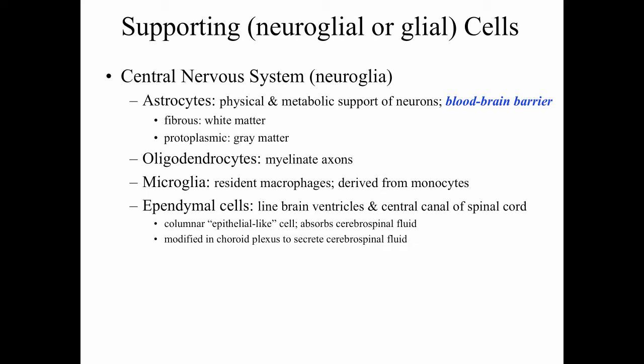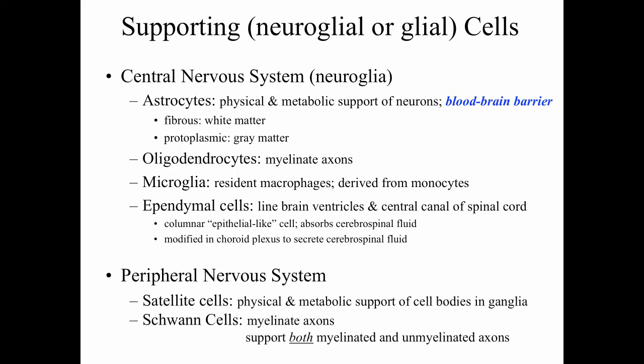Ependymal cells are a cuboidal or columnar shaped epithelial-like cell. They primarily absorb cerebrospinal fluid, but within the choroid plexus, these ependymal cells are modified to secrete cerebrospinal fluid. So these are the glial cells within the central nervous system.